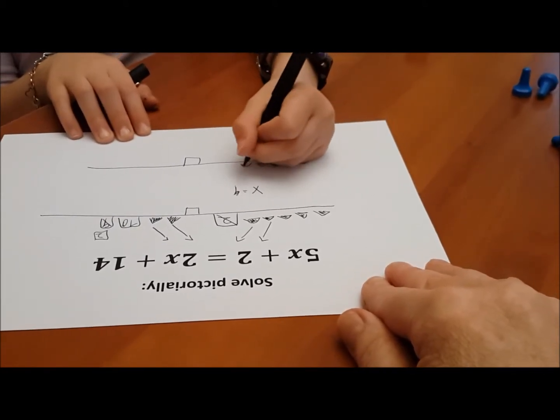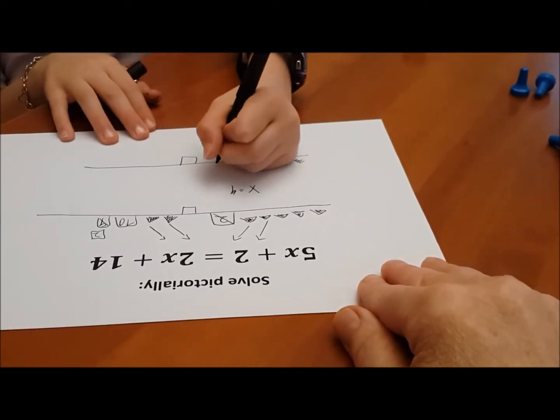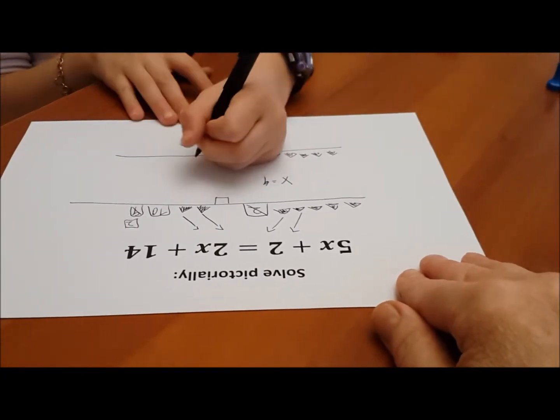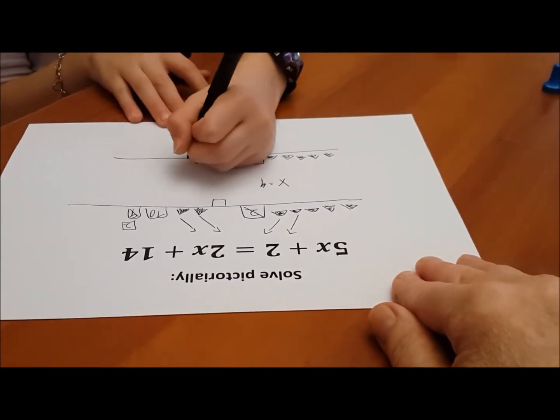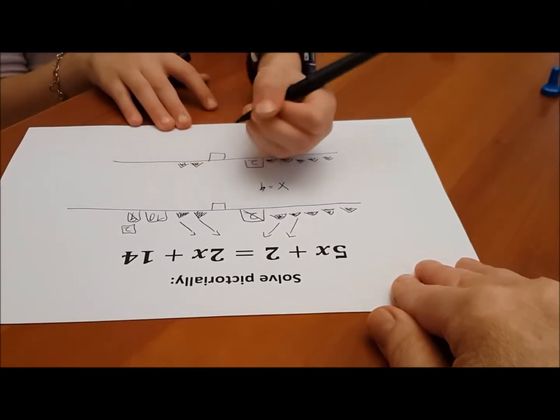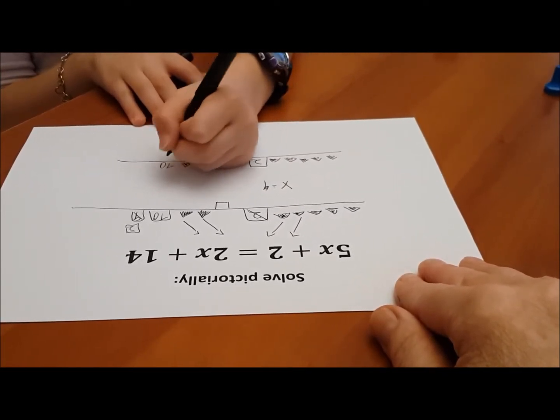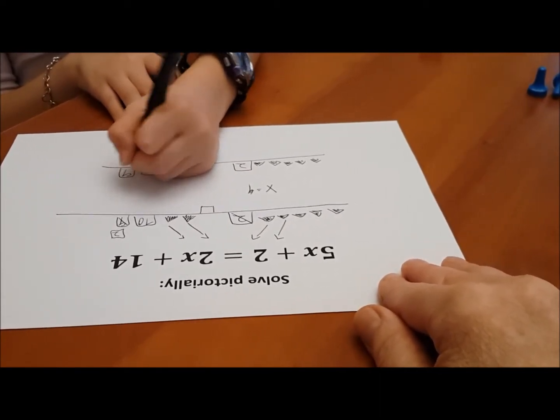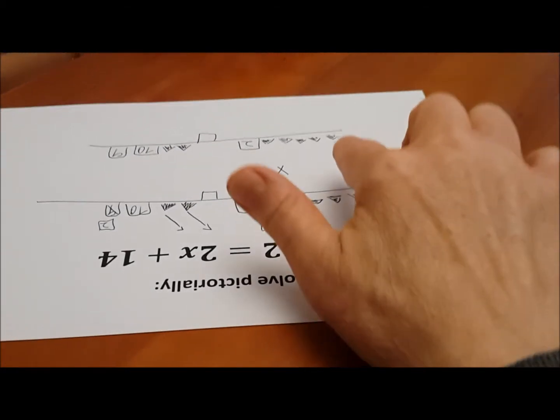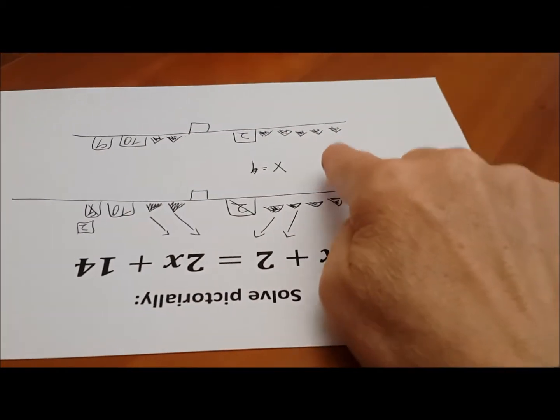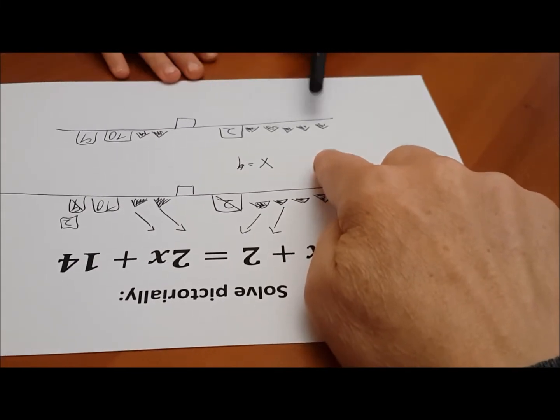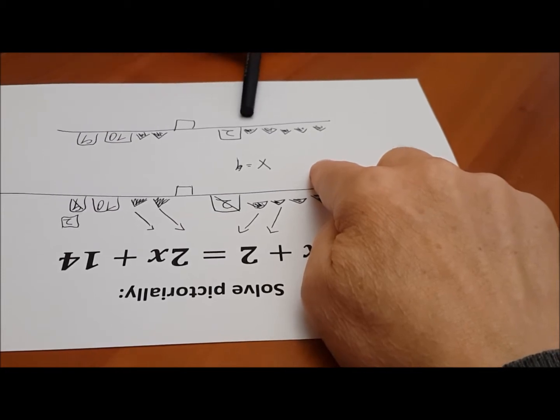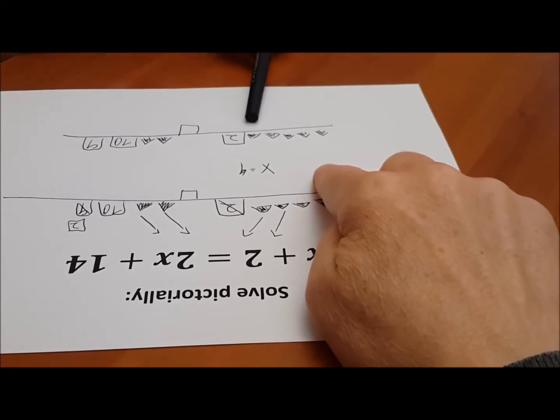So we have 5x's plus 2. Again, on the other side we have 2x's plus 14. Now if 4 is the correct answer, both sides will balance. So could you do the arithmetic for me? What do we have here? 4, 8, 12, 16, 20, 22.